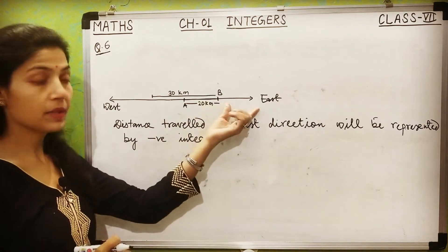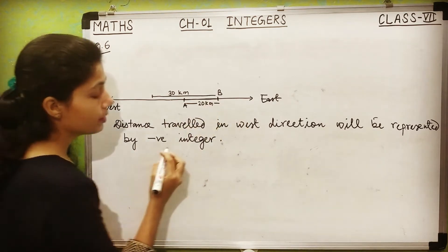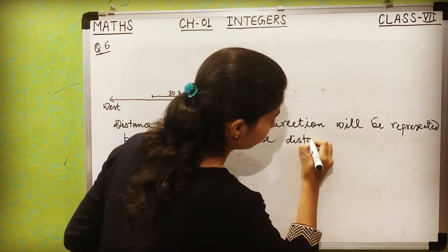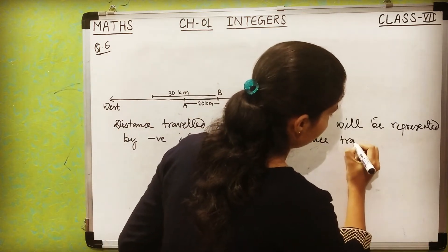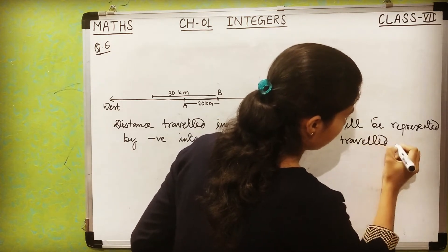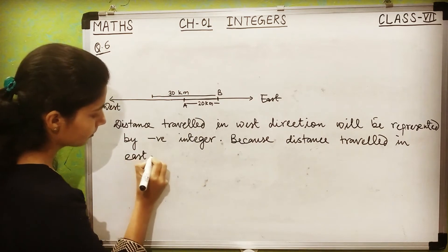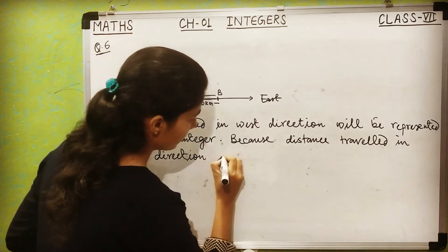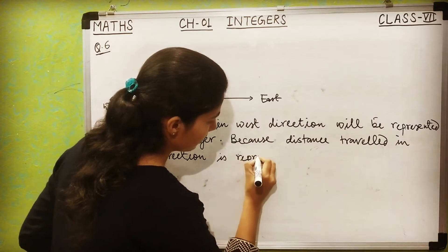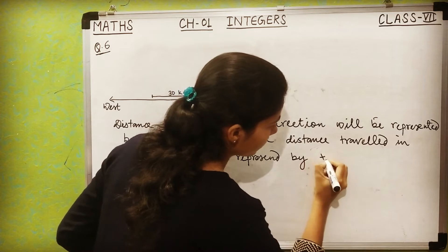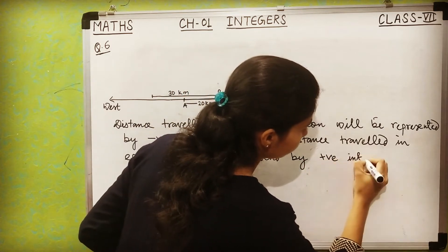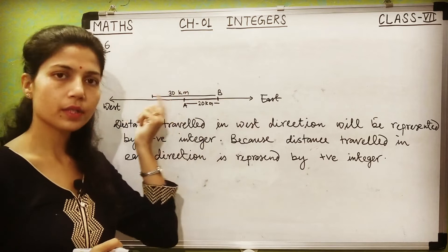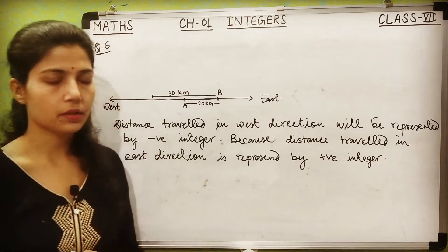Why? Because distance travelled in the east direction is represented by a positive integer. So since east uses positive integers, west will be represented by negative integers.